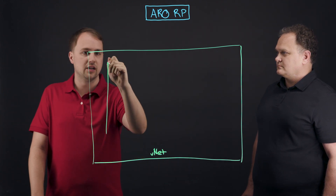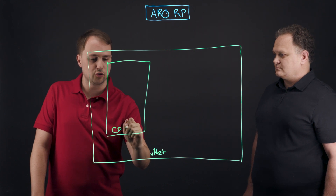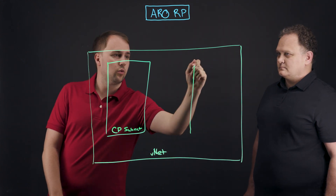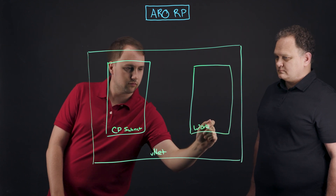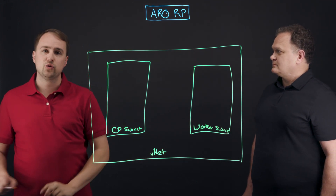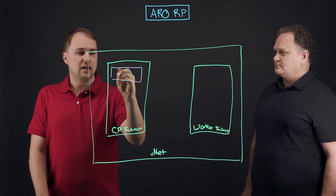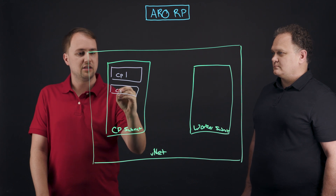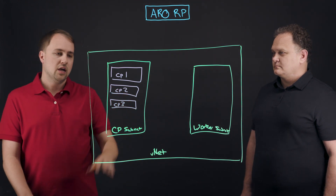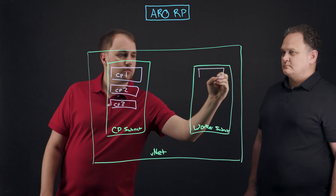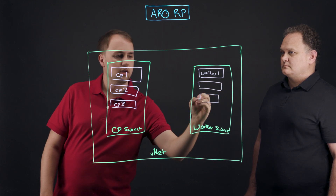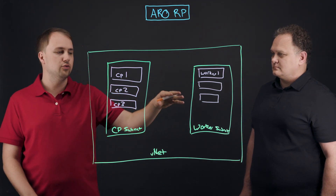It's basically an isolated set of subnets that we use to hold your cluster. Inside of this VNet, we have subnets. The first we call the control plane subnet, and the other is what we call the worker subnet. Both of these subnets are intended to hold individual things that we call nodes. In our control plane, we've got CP1, CP2, and CP3 — our three control plane instances. And then in our worker subnet, we have worker nodes: worker one, two, and so on. As we add more worker nodes, they go into the worker subnet.